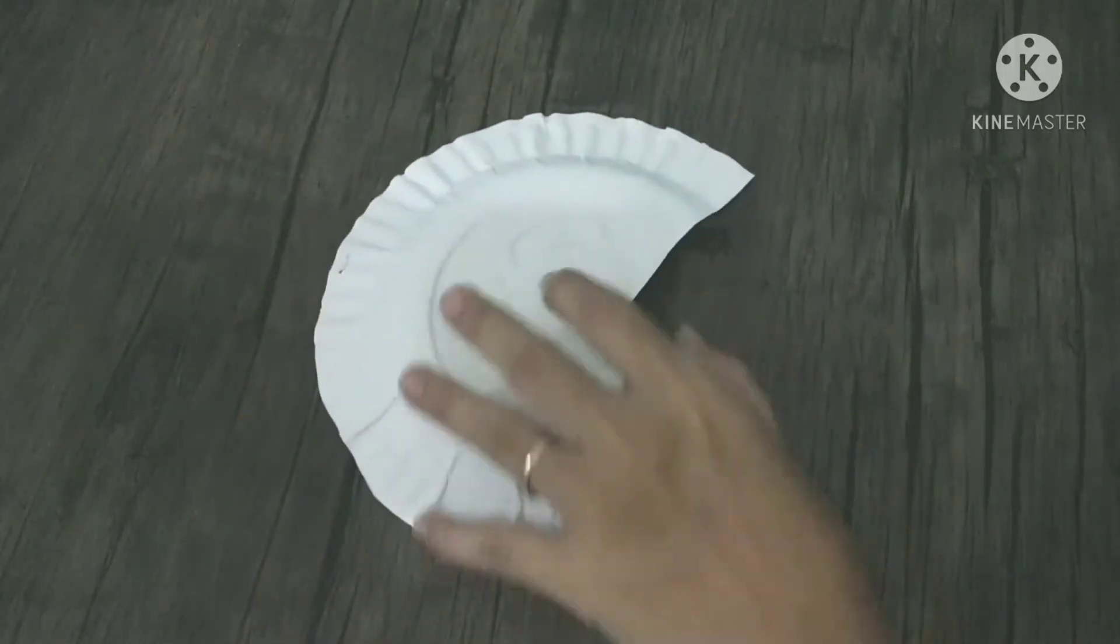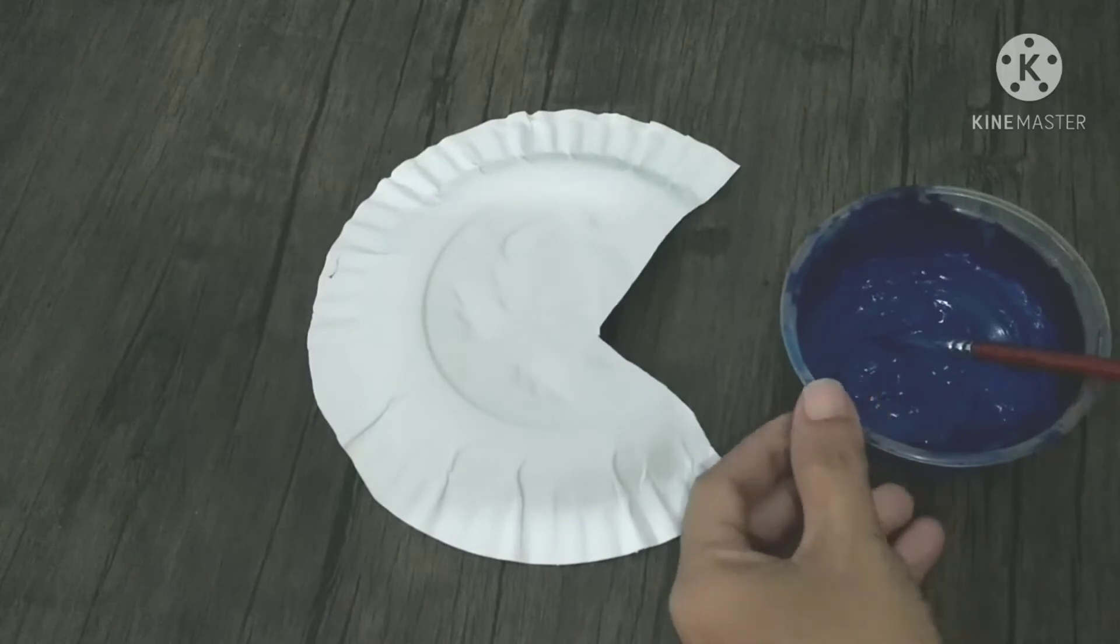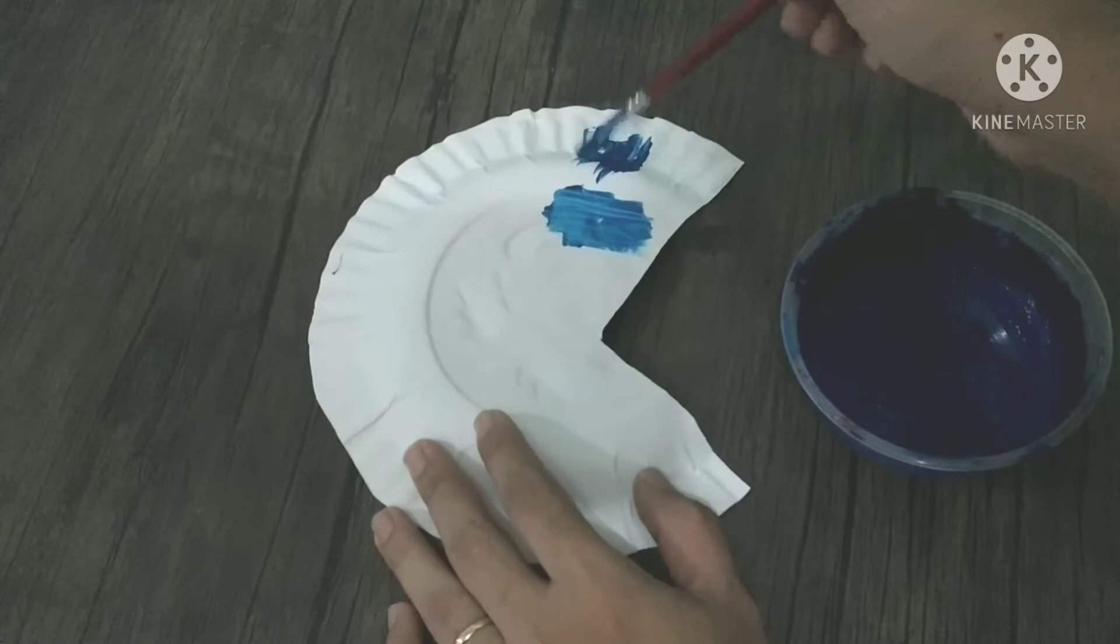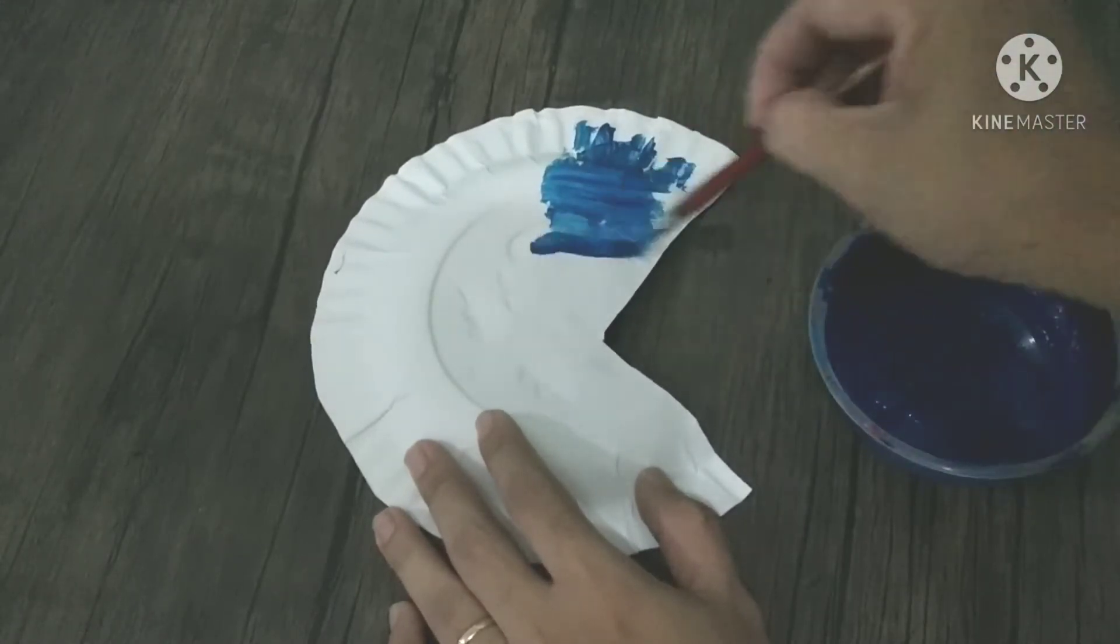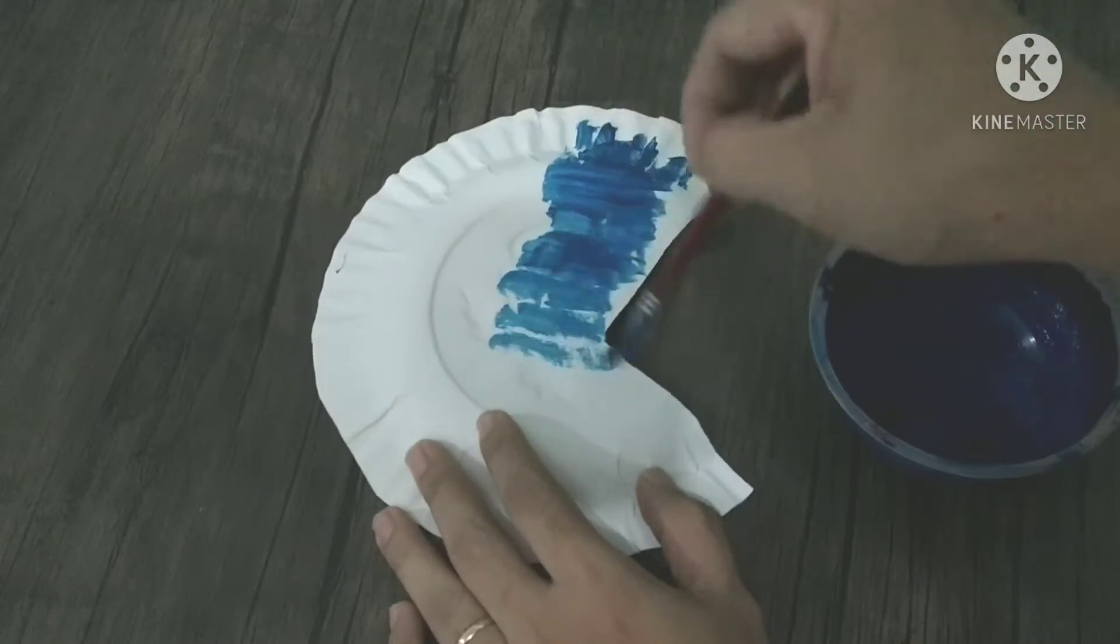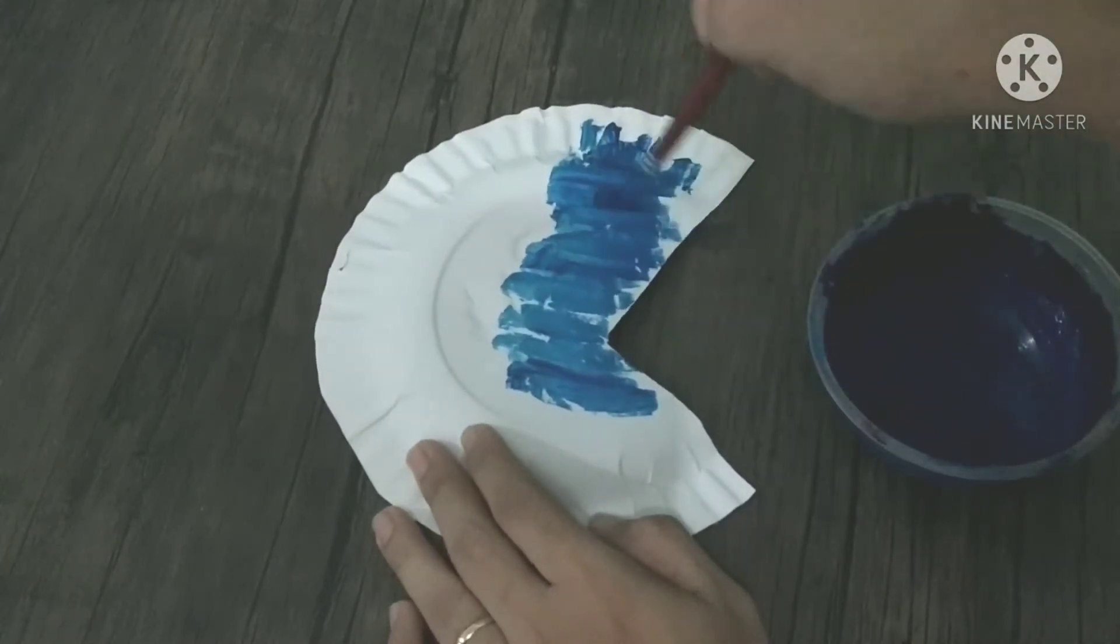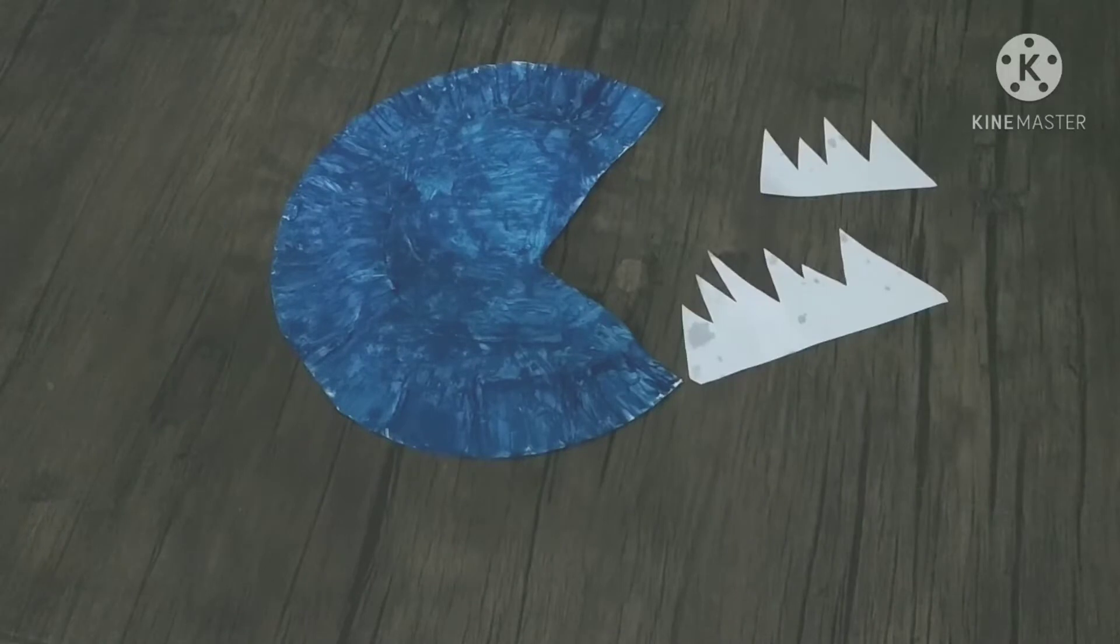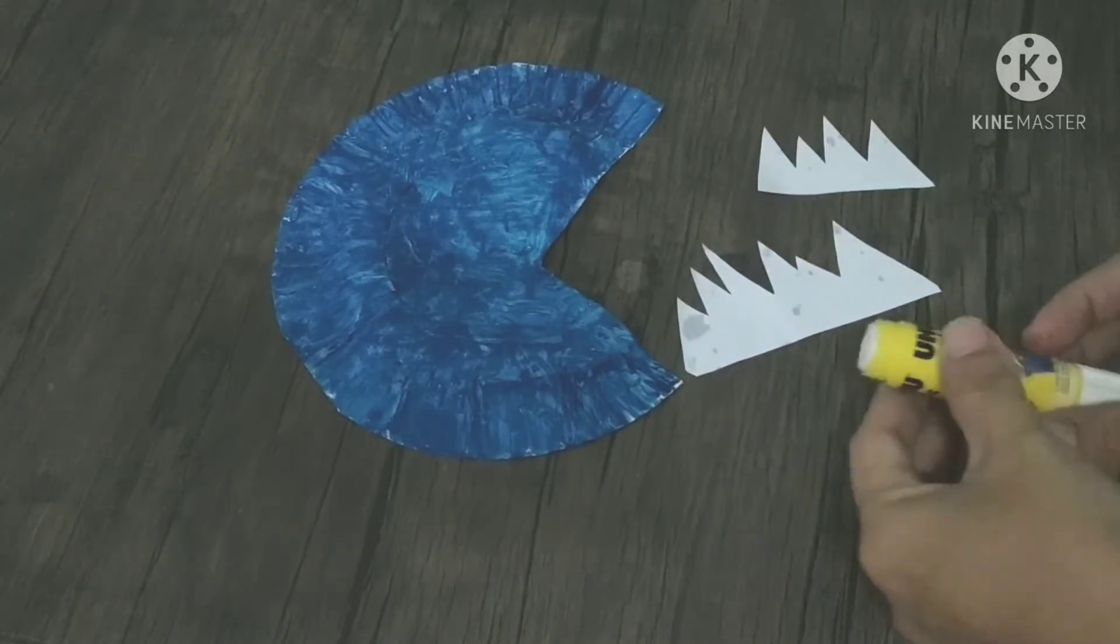Paint this blue. You can use a bigger paintbrush. Make sure you cover all the surface. After these are all painted, let them dry. Second step is pasting this sharp teeth.